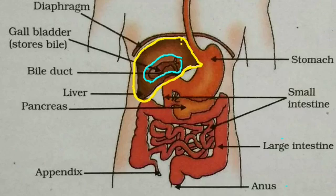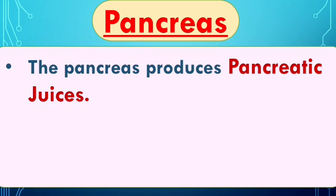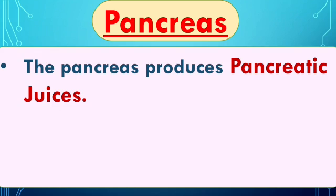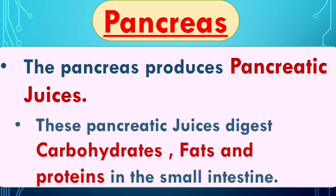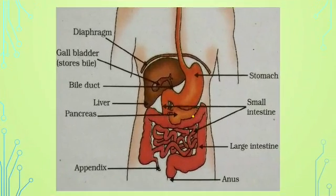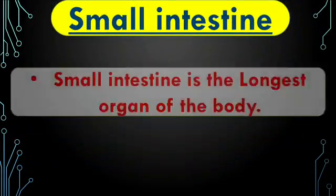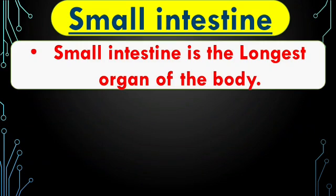The pancreas releases pancreatic juices, and these juices help to digest carbohydrates, fats, and proteins in the small intestine. See in the picture — here is the pancreas. The small intestine is the longest organ of the body; note that the largest organ is the liver, but the longest organ is the small intestine.